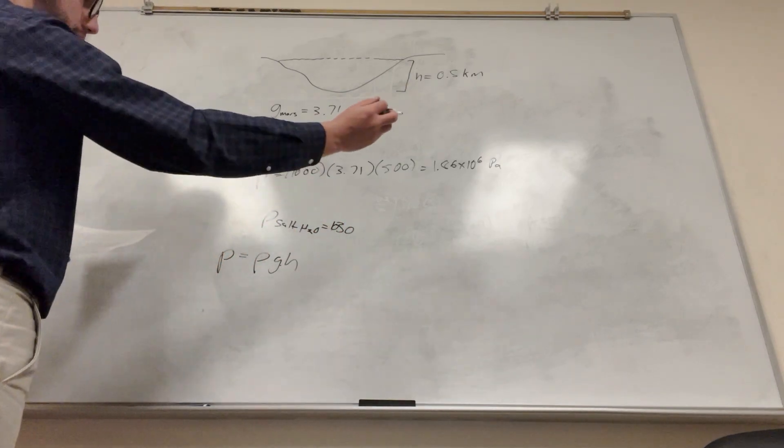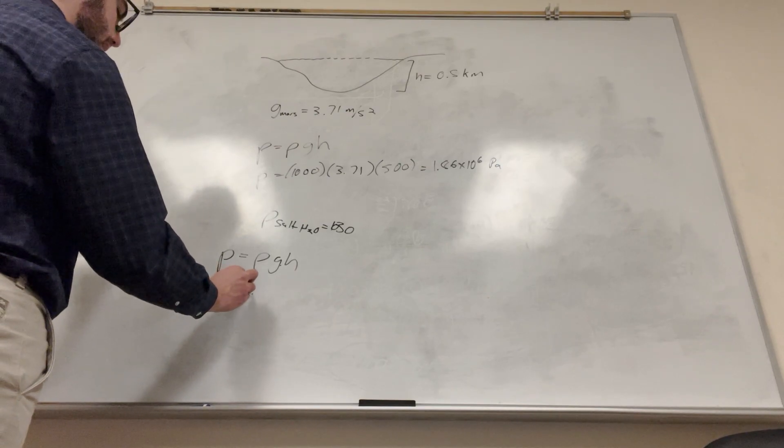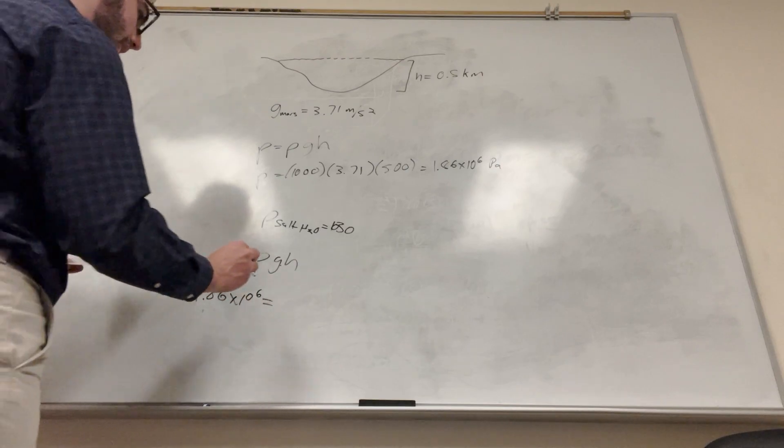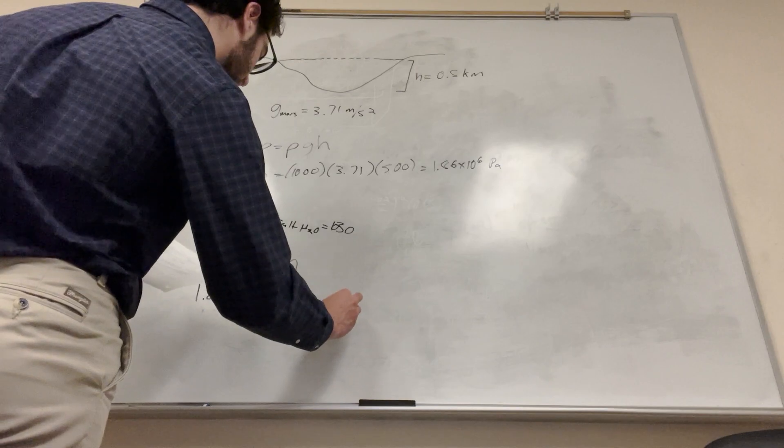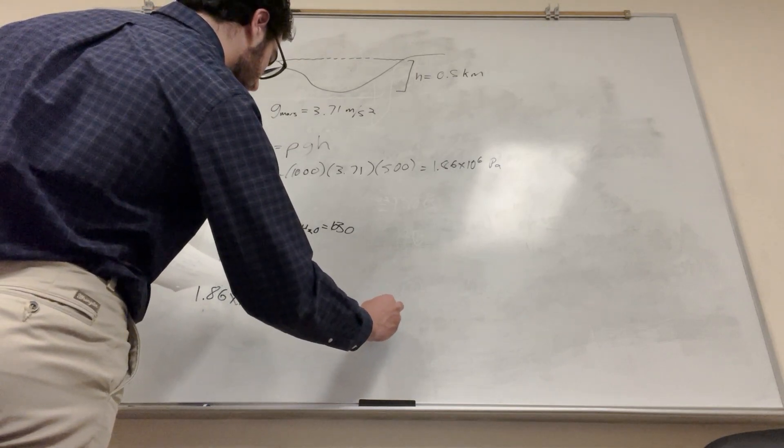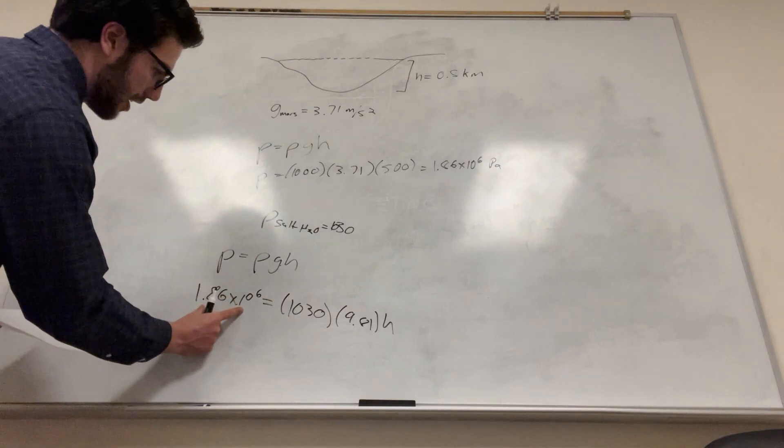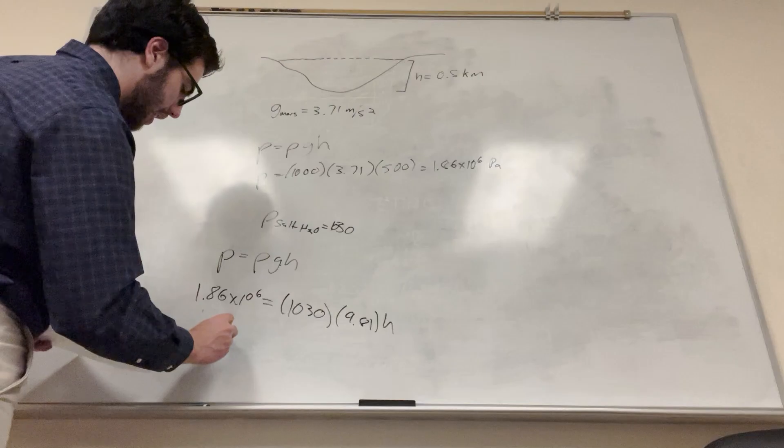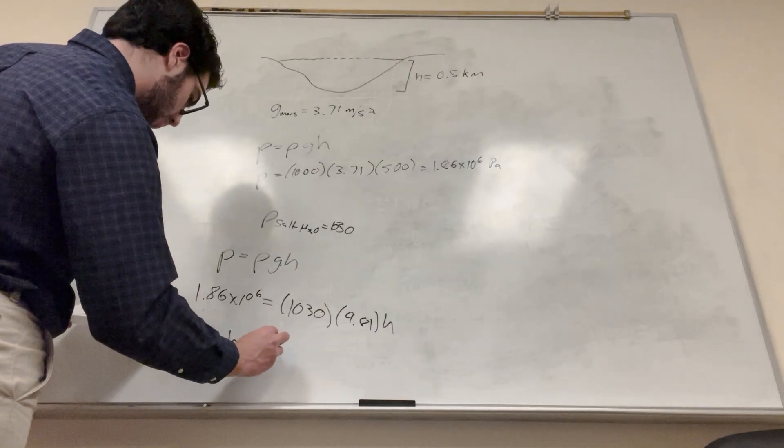So we know that we're trying to find the same pressure. So 1.86 times 10 to the 6. Why am I doing this? It's ugly, but it's okay. Equal to 1030 times the gravity of Earth, 9.81. That's the height. So if you want to find this number, what you're going to need to do is take this and divide it by 1030, and then divide it by 9.81. And you're going to get that the height is equal to 184 meters.